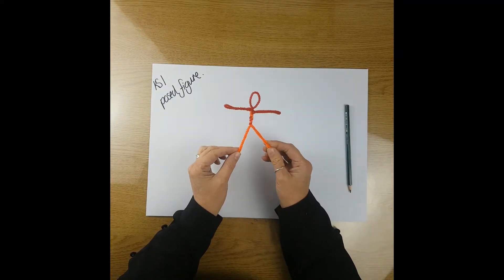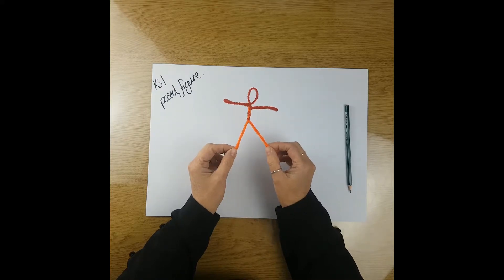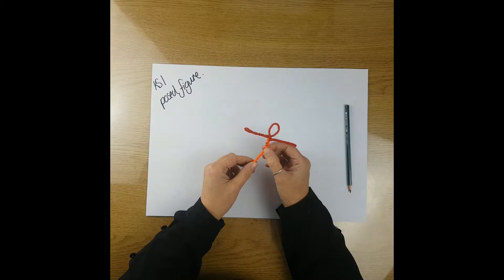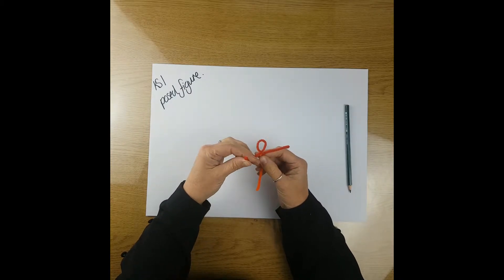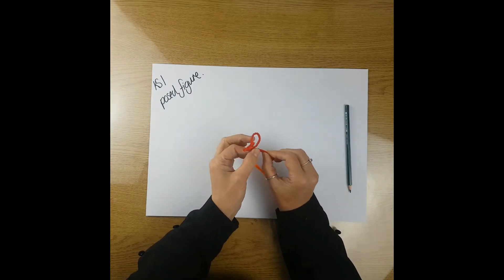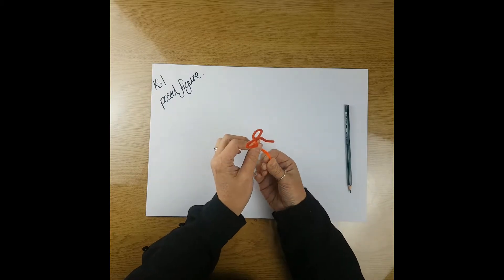So once you've imagined this stick man running down the front of this person's body, you've got to remember that these lines can bend. When your person moves, so do the lines.